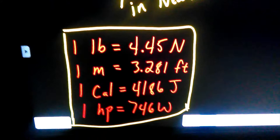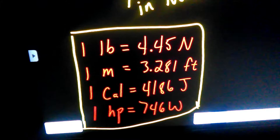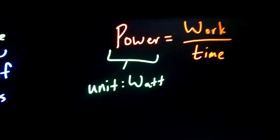You do have to do some conversions as you're solving this lab. One pound is equivalent to 4.45 newtons, one meter is 3.281 feet, one food calorie is 4186 joules, and one horsepower is 746 watts.